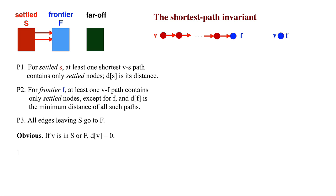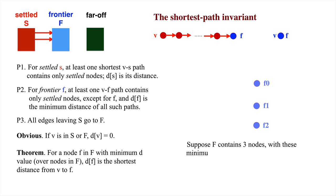We now prove an important theorem. For a node f in the frontier set with minimum d value over nodes in the frontier, d sub f is indeed the shortest path from v to f. For example, suppose the frontier set contains three nodes: f0, f1, and f2.